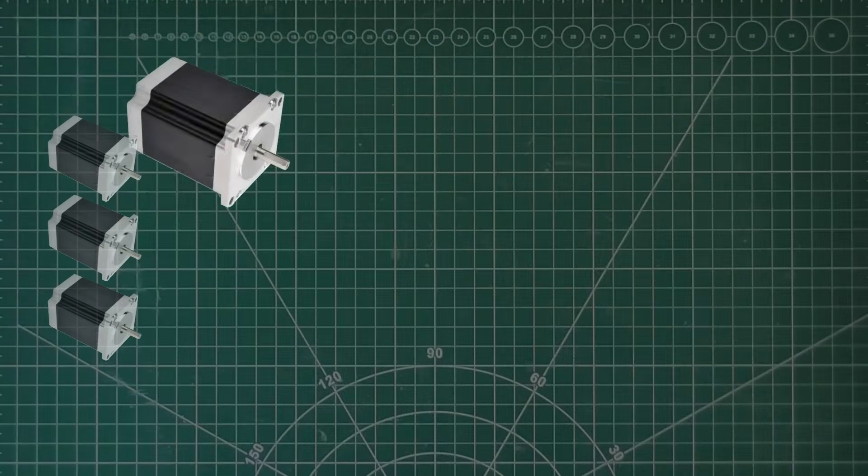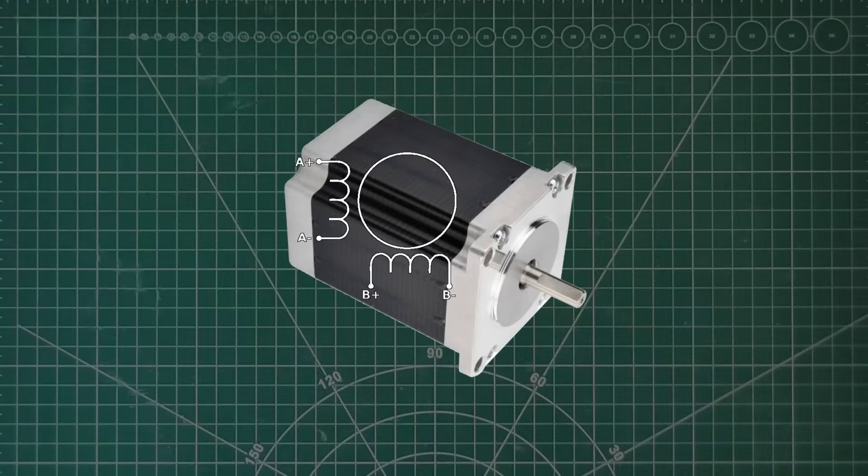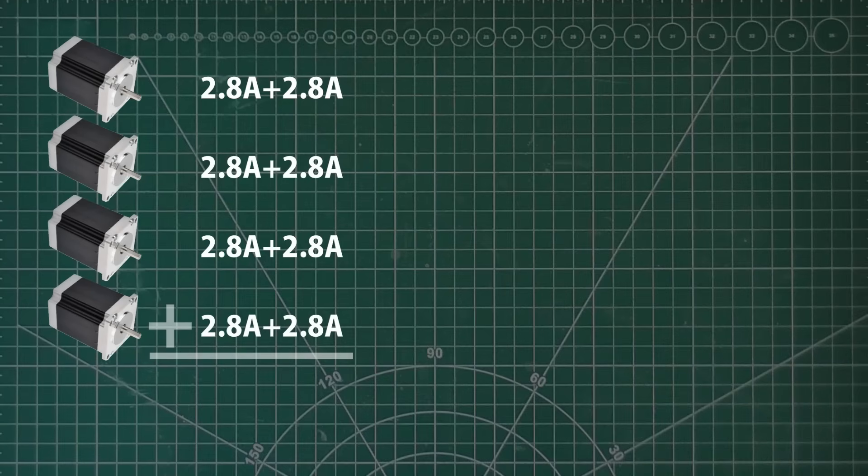Now you probably know stepper motors have two phases, each of which can draw the rated current. So is that 2.8 amps for the whole motor, or 2.8 for each phase, making 5.6 amps total? Let's say it's 2.8 for each phase to be on the safe side. This is already adding up to a lot. But since I'm not sure about this, let's multiply everything by a safety factor of say 20%, just to be sure. So altogether that's 26.88 amps.